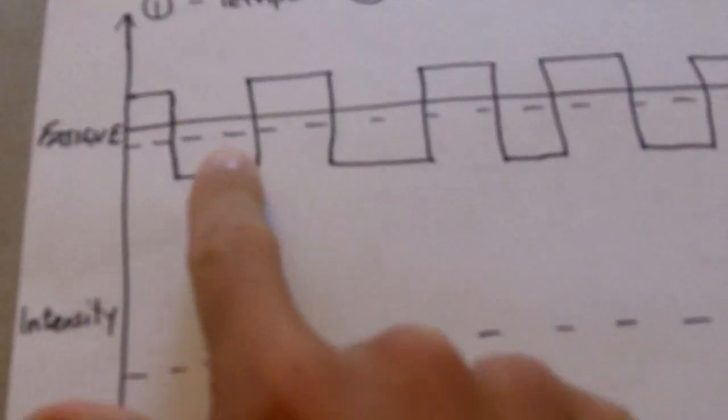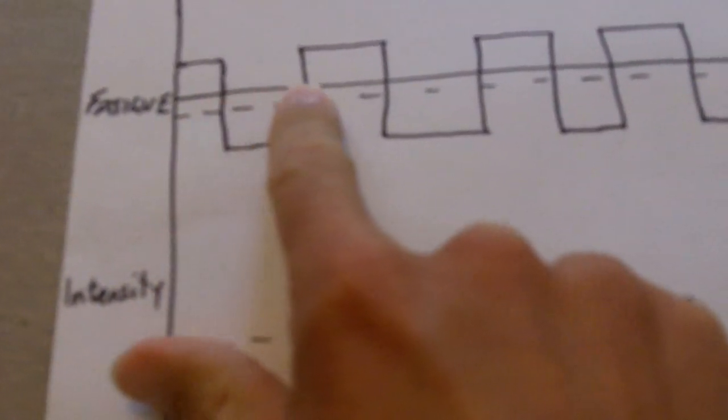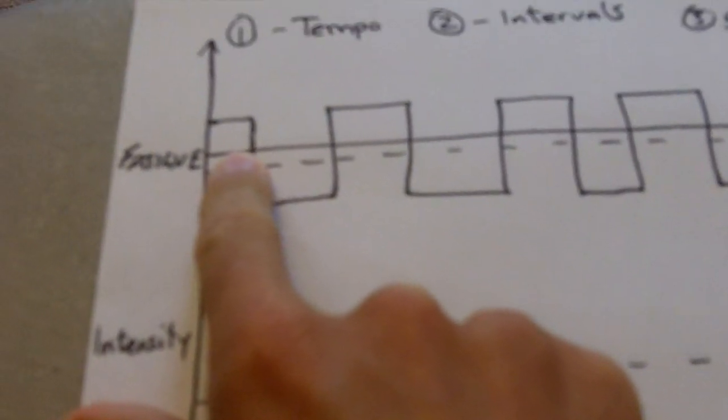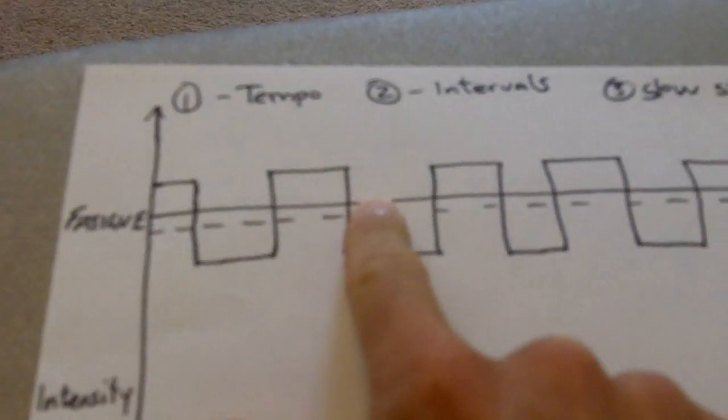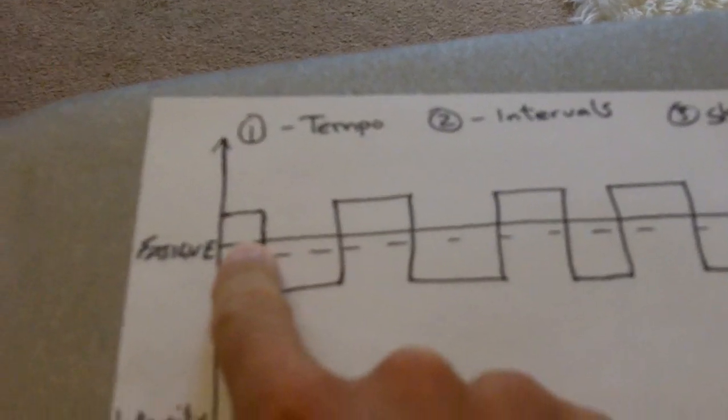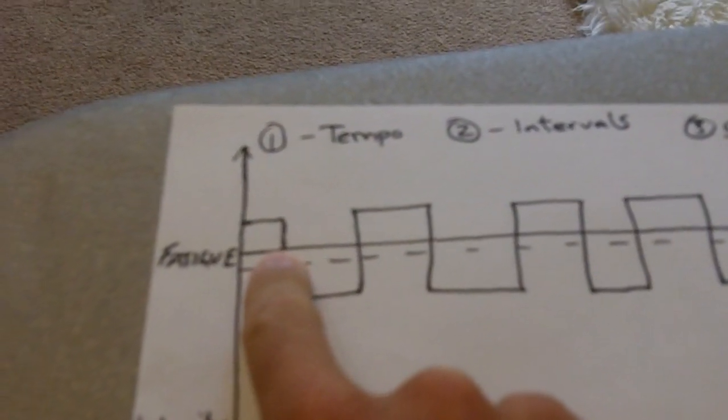Now if you look at my little bit of paper here, this solid line here, imagine this is your point of fatigue. This is the point where if you go any quicker, if you work any harder then you're going to have to slow down.